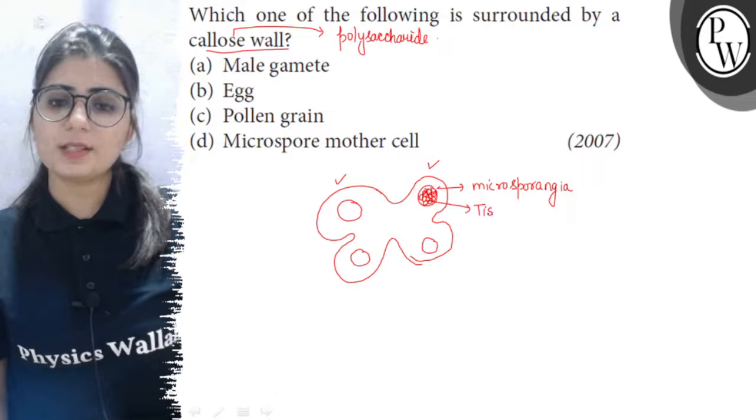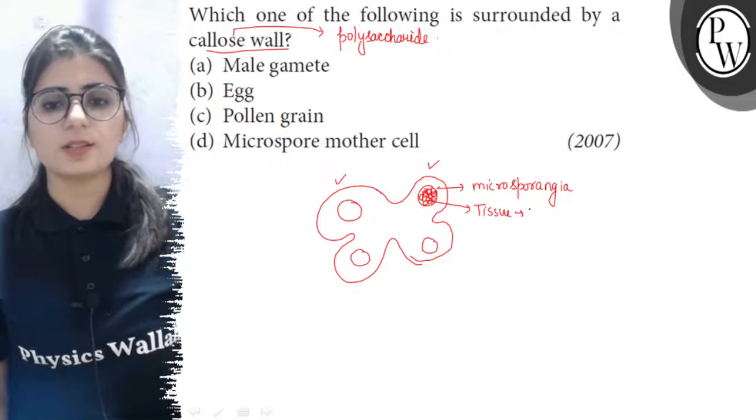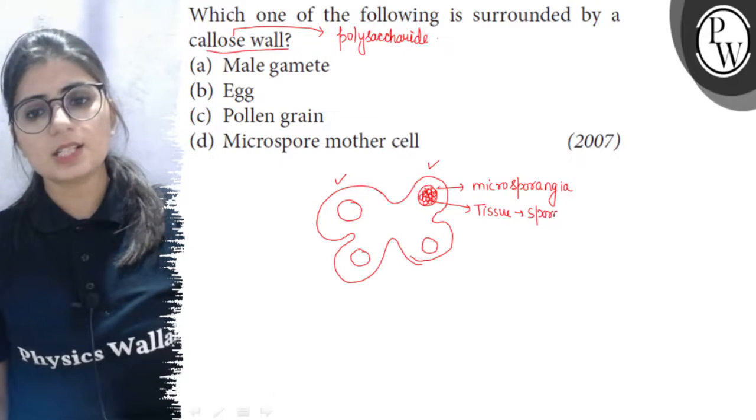So, this tissue present here is called the sporogenous tissue. It means it is spore forming tissue. So, sporogenous tissue.